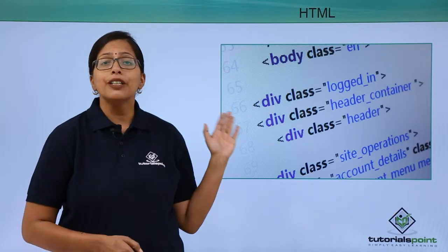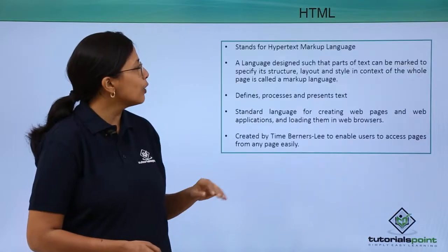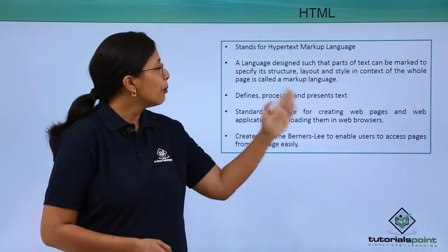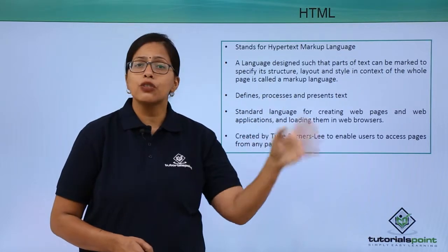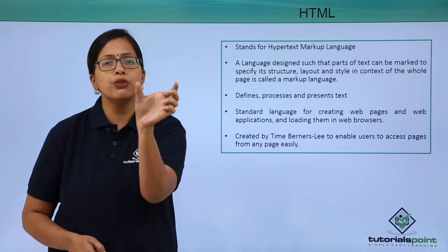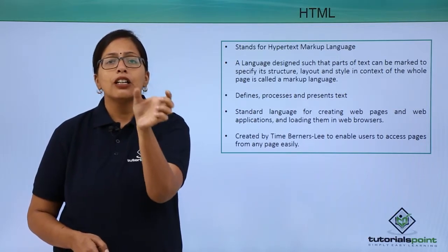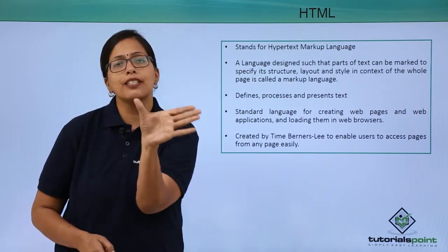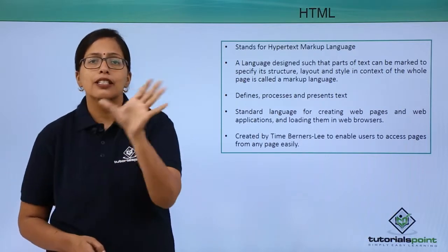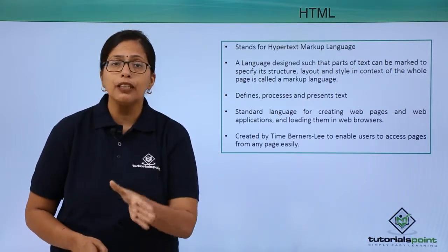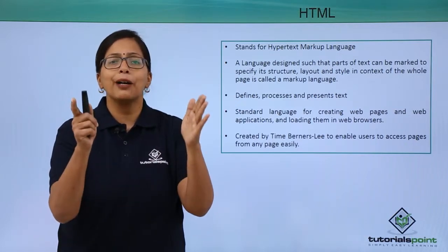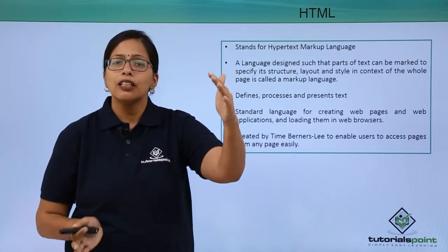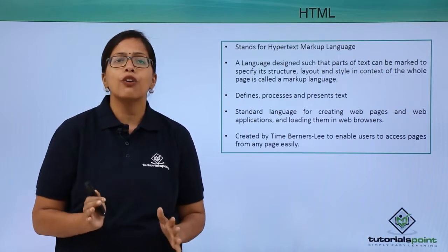HTML stands for Hypertext Markup Language. It is a language that is designed in such a way that its part of text can be marked to specify its structure. For example, you will just write a few words like 'my name is Amir.' That name can then be given some tags so that at some places it will be black, some places it will be red, some places it will be bold, some places it will be italicized. So that is called marking up the text. The HTML language is created in such a way that the complete program that is written is always in the form of tags.